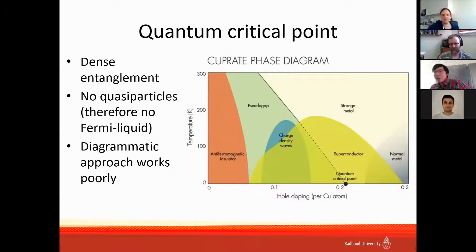Let's start with why we need holography in the context of high temperature superconductors. Serious hopes for understanding this phenomenon are related to the concept of a quantum critical point, an exotic state of matter with dense entanglement and without quasi-particles, and therefore there is no Fermi liquid theory.